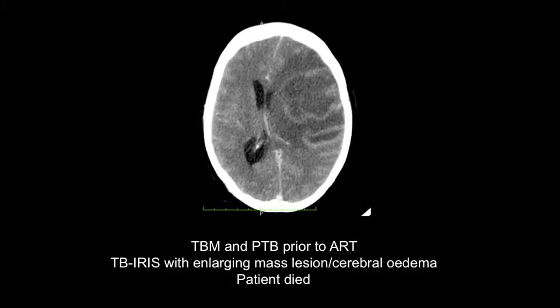This suggests neutrophils have an important role in the pathogenesis of neurological TB IRIS. One unfortunate example is a young woman with TB meningitis who started TB treatment, improved, went home, started ART, came back with hemiparesis and seizures, and despite stopping antiretroviral therapy, high-dose dexamethasone, and supportive treatment, died two days later with a huge enlargement of a cerebral tuberculoma, midline shift, and associated cerebral edema.